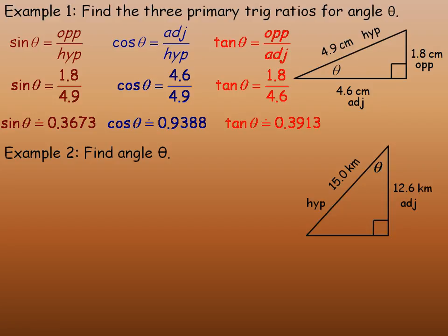So I'll write cos theta equals adjacent over hypotenuse, the normal cosine ratio, and we'll substitute the 12.6 and the 15 in place of the adjacent and hypotenuse.